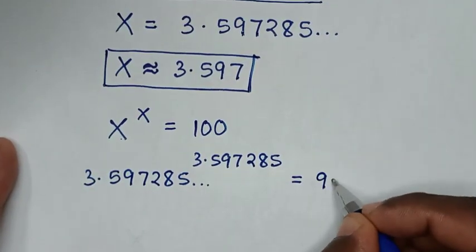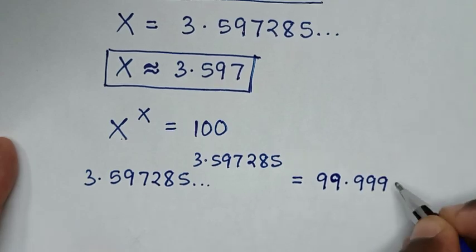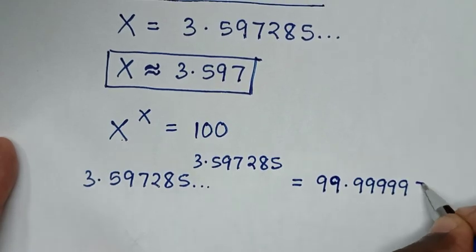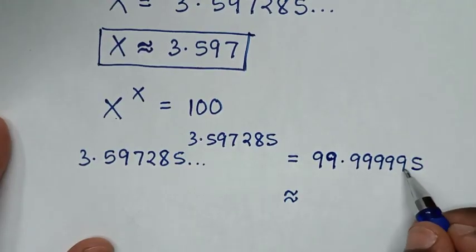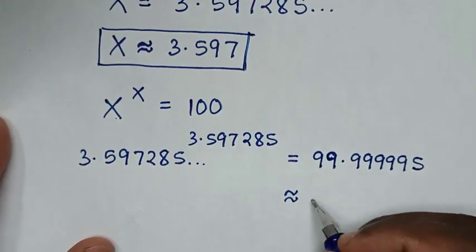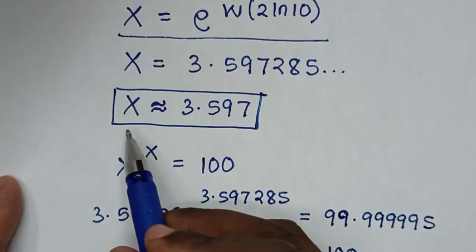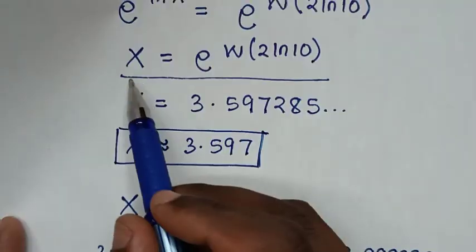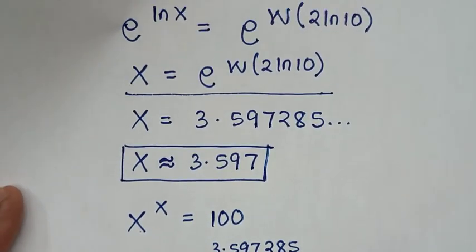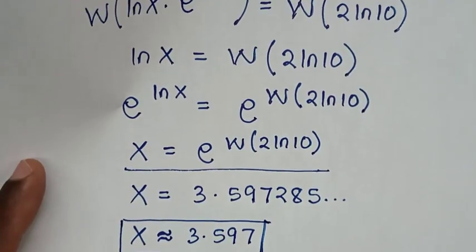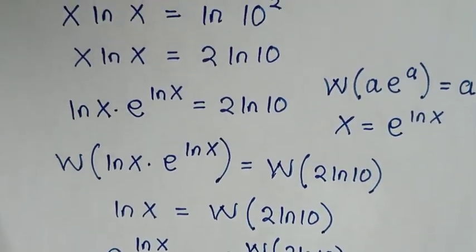So it is approximately equal to — if we round off to just one decimal place — it will be 100.00, which is 100. Therefore, this is the correct answer. Thank you for watching, don't forget to subscribe to my channel, and see you in the next video. Bye-bye.